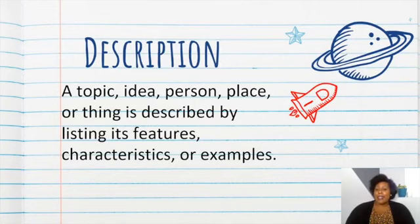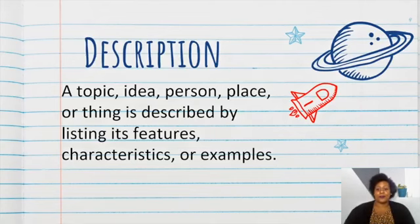Description: a topic, idea, person, place or thing is described by listing its features, characteristics or examples. I'd also suggest that you pay attention to the text features that may be there with description text. Here are some keywords to better help you understand a description text. Now, what I notice about these words is that they can be describing an object, giving a location of something or explaining a situation.